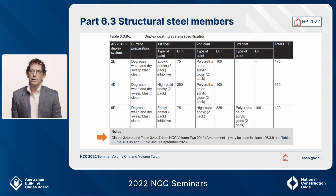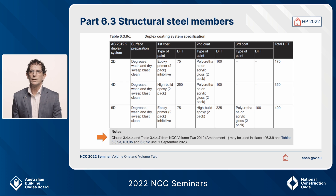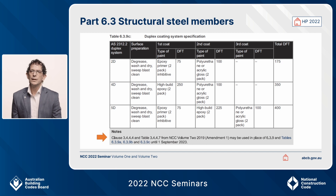Corrosion protection — the important thing to note is that for the tables in NCC 2022, we've set out a set of different and new solutions for corrosion protection. They are quite different to the current provisions in the tables for corrosion protection in 2019. But if you look at the bottom of this table, we've provided a note to say that for a period of 12 months from the adoption of NCC 2022, you can still use the provisions that exist in 2019. So in summary, from the adoption date you have 12 months that you can still use the 2019 corrosion protection table requirements.